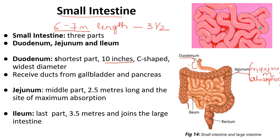To summarize the structure: the small intestine is 6 to 7 meters in length and has three parts. The shortest part is duodenum. Jejunum is the middle part and most essential because maximum absorption takes place here. The last part is ileum, which is approximately 3 to 5 meters long.